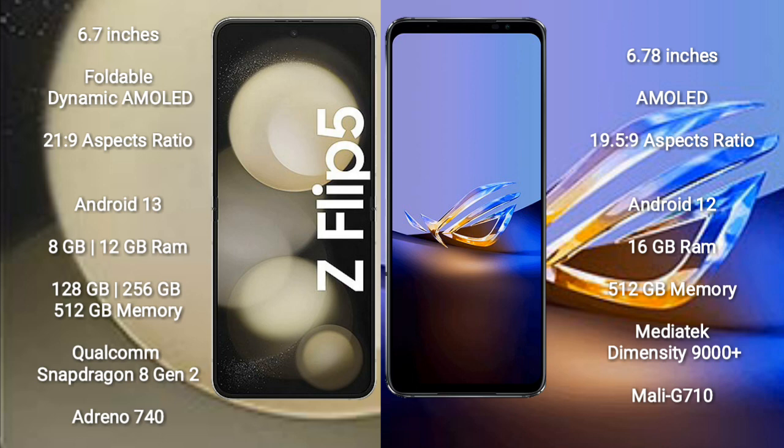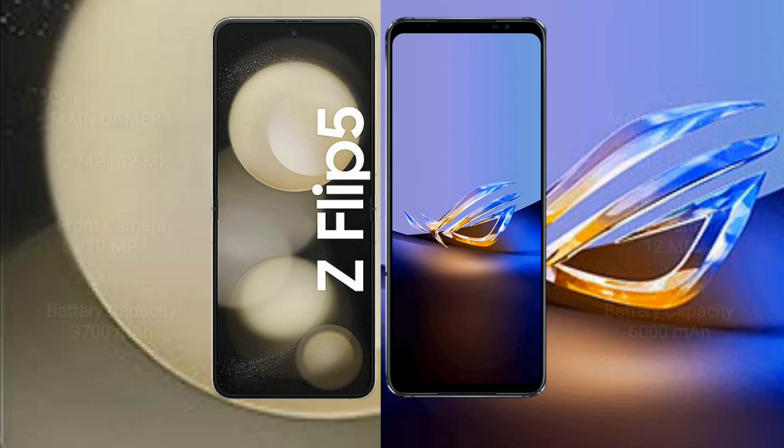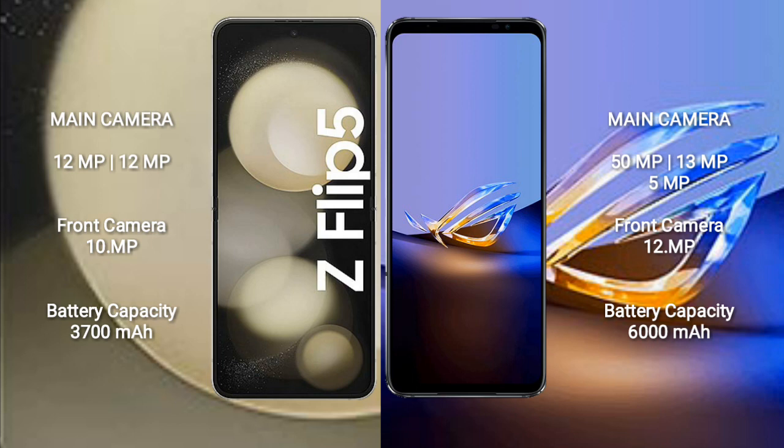The Asus ROG Phone 6D Ultimate comes with 16GB RAM and 512GB internal storage, powered by the MediaTek Dimensity 9000+ processor and Mali-G710 GPU. The Samsung Galaxy Z Flip 5 features a dual rear camera setup of 12MP plus 12MP, and a 10MP front camera. The Asus ROG Phone 6D Ultimate comes with a triple rear camera setup of 50MP plus 13MP plus 5MP.